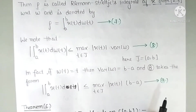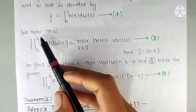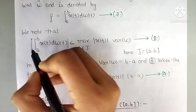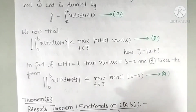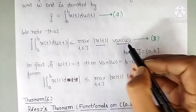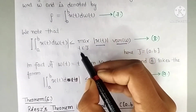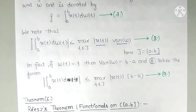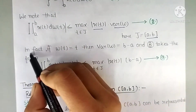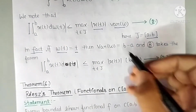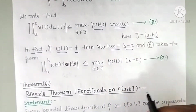We also know that the modulus of the Riemann-Stieltjes integral is less than or equal to ||x||_∞ · V(w), where the maximum of x is taken over the closed interval [a,b]. In the special case where w(t) = t, the variation of w becomes b − a.